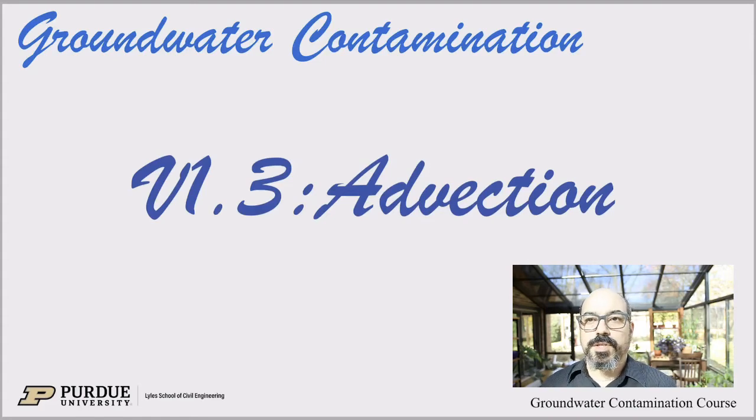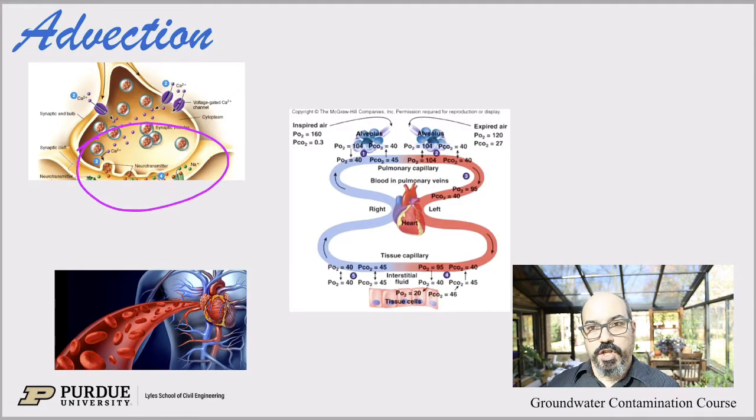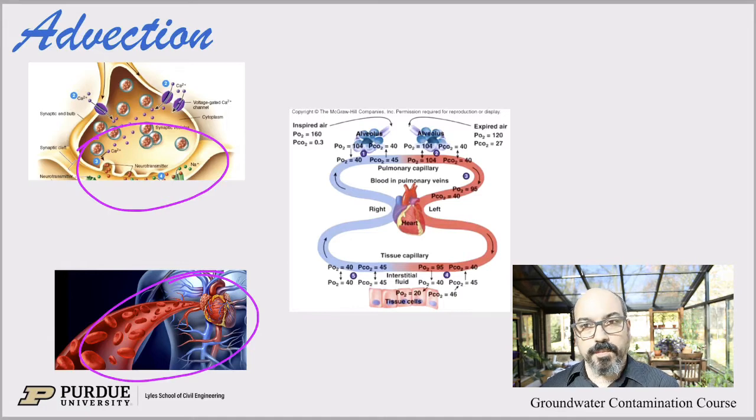Welcome back everybody. Today we're talking about advection. Just as a reminder from a couple lectures back, we saw how diffusion is very efficient at small distances, like between neurons in your brain, but at longer distances like between your lungs and your brain or your lungs and your muscles in your legs, diffusion is not an efficient mechanism.